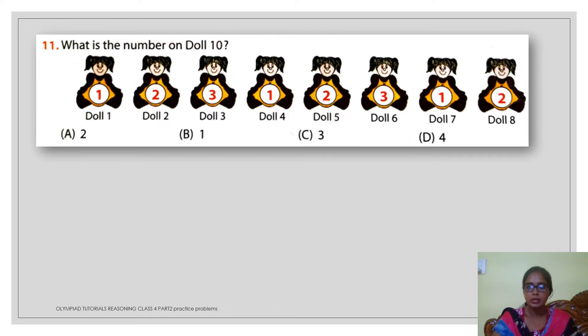Just by observation, if you just go on continuing, doll number 7, I will just write down the numbers here. 7, 8, 9 and 10. Doll number 7 again it is having number 1, 8 is having number 2, the 9 will have number 3. And again this series is going to repeat from doll number 10. So here our answer will be option B, 1. Very simple example.